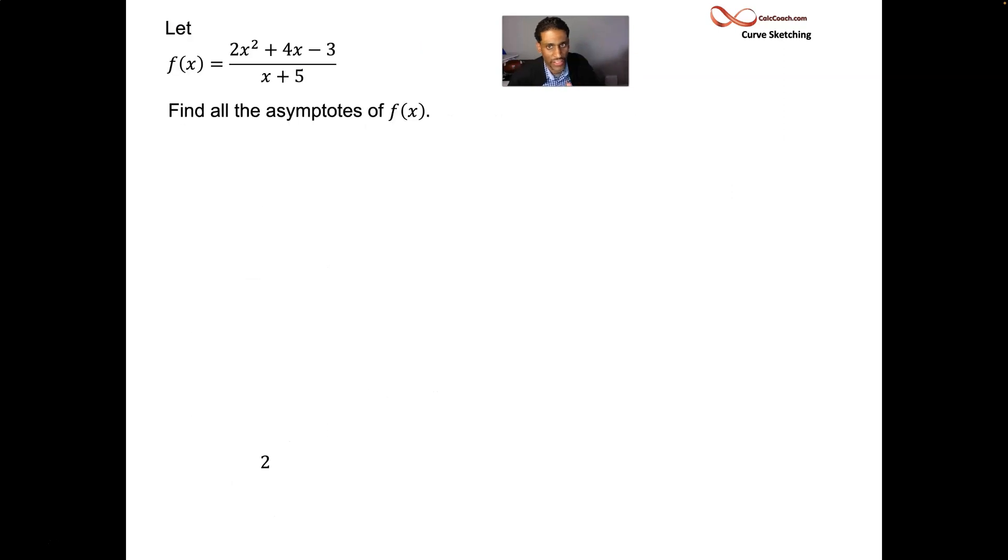It's your job to long divide the bottom into the top. Unless the bottom is a linear, then you can use the shortcut to the long division, which is synthetic division. Let's take a look at a quick example. We have this rational function. I'm going to look at all possible types of asymptotes.